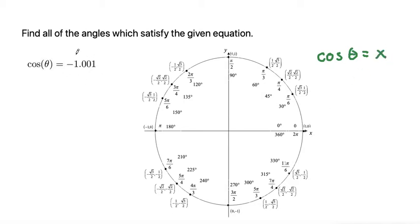So what we need, what we're looking for is where the x coordinate is equal to negative 1.001. So we don't have any decimals on the unit circle, but we can have a good idea of where we're looking based on the unit circle.